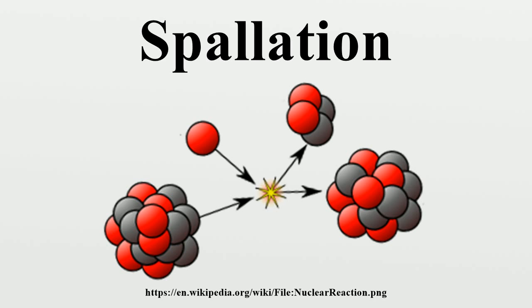Nucleus spallation is one of the processes by which a particle accelerator may be used to produce a beam of neutrons. A mercury, tantalum, lead, or other heavy metal target is used, and 20 to 30 neutrons are expelled after each impact. Although this is a far more expensive way of producing neutron beams than by a chain reaction of nuclear fission in a nuclear reactor, it has the advantage that the beam can be pulsed with relative ease. The concept of nuclear spallation was first coined by Nobelist Glenn T. Seaborg in his doctoral thesis on the inelastic scattering of neutrons in 1937.